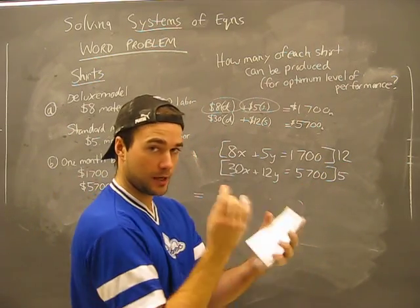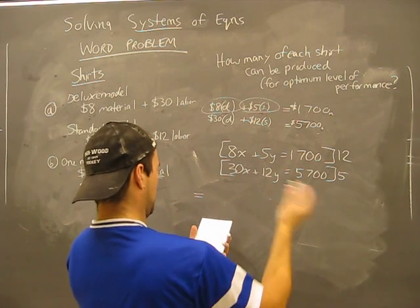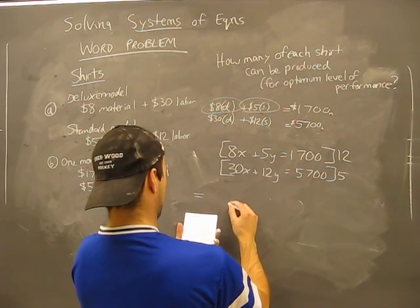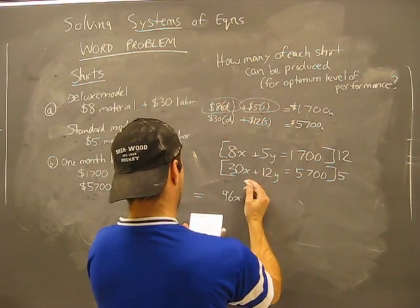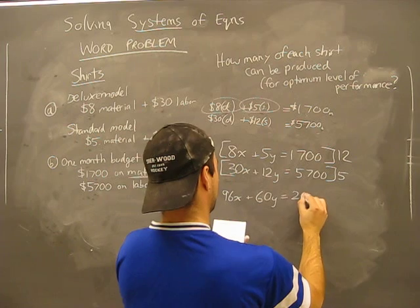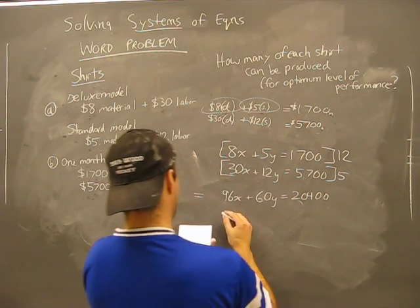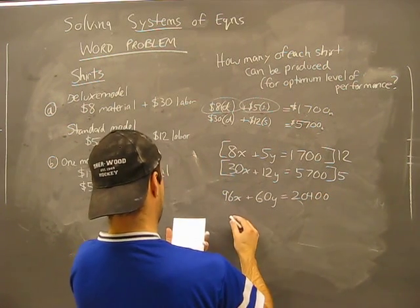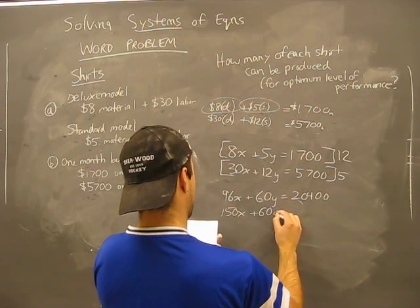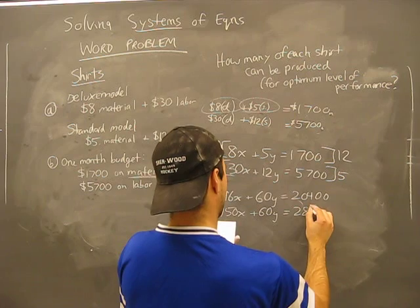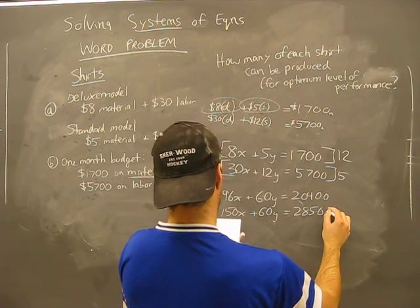Here is what our new numbers are going to be. I've got to look off my paper for this to be fast and efficient. 96x plus 60y equals 20400. And I'm going to make that equal sign there. And 150x plus 60y equals 28500.